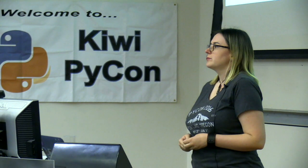In JavaScript, what is 4 plus 2? It's 6. What is 4 minus 2? It's 2. What is 4 minus the string 2? It's 2. So 4 plus the string 2 must, of course, be 42.